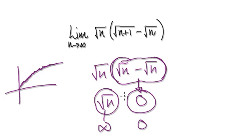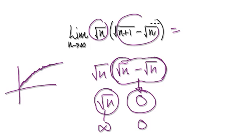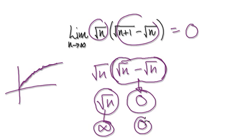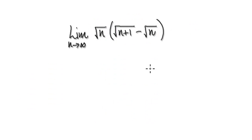As n gets bigger and bigger, this thing here is going to head towards infinity. This thing here is going to head towards zero. You can't just simply say you've got something times zero equals zero. You can't really say that, because infinity times zero — anything could happen.